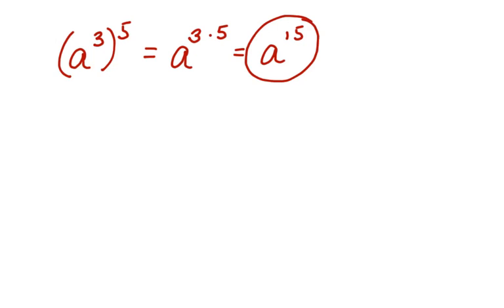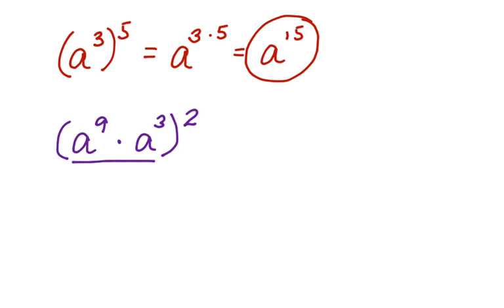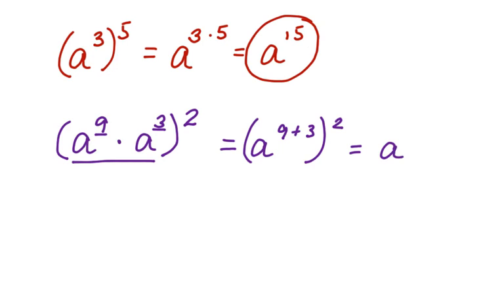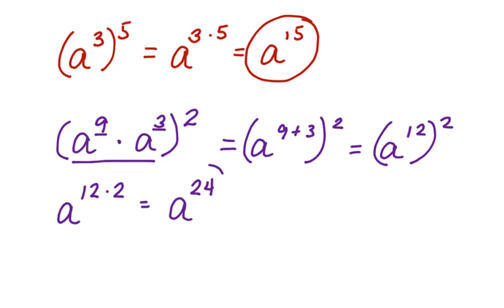Sometimes you can also have a situation like this: a to the ninth times a cubed, and all of that quantity is squared. I'm going to work inside the parentheses first. So I have a to the ninth times a to the third — I'm going to add these exponents: nine plus three, keeping the squared for later. That equals a to the twelfth squared. Now I can multiply 12 times 2, and my final answer is a to the twenty-fourth power.